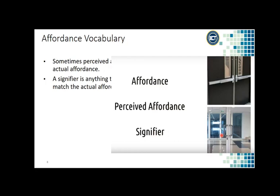In that case we need to use signifiers. For example, if I want to indicate which door needs to be pushed or latched, I can color it black. What we are doing is using signifiers to align the perceived affordance with the actual affordance. Similarly for a pull door, we can just write 'pull' — people will then know to grab the handle and pull it. The use of signifiers actually aligns perceived affordances and actual affordances.